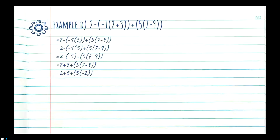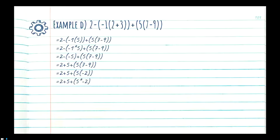We bring everything on the left down and solve 7 minus 9, which gives us negative 2. Now looking at our equation again: '2 plus 5 plus' a bracket, and then we have 5 — nothing between it and the bracket — then negative 2. That converts to 5 times negative 2, because we want to expand the bracket. So it's 5 times negative 2.